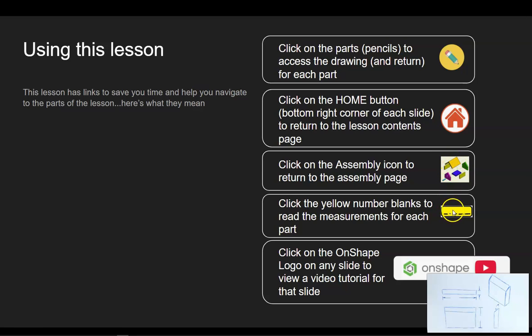These yellow number blanks are for finding the measurements, and the OnShape YouTube button will get you to the tutorial videos so that you can see how to do each exercise page by page.